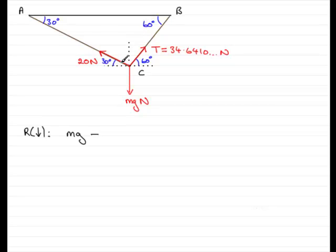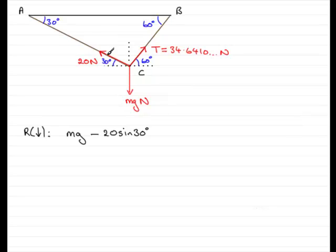What is that component going to be? Well, remember if you include the angle it's cosine, and in this particular part of the question we're excluding the angle — we're looking at this part here which excludes that 30 degrees. So it will be sine. So we've got 20 sine of 30 degrees. That's the amount of force coming from the tension AC that acts upwards.